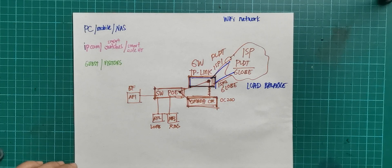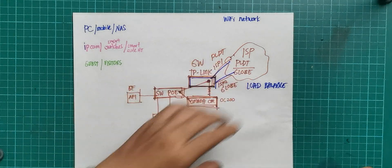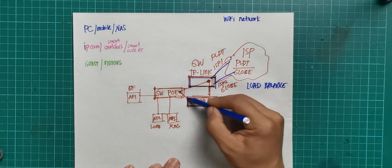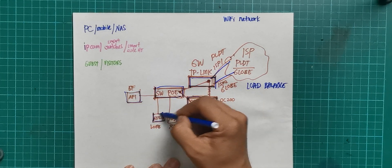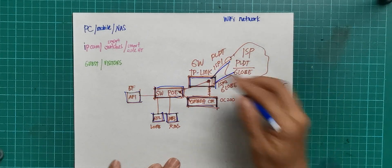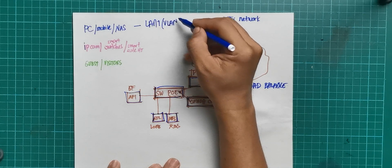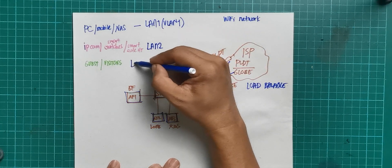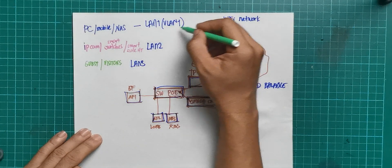So that's the hardware part: three APs in the Omada system. The Omada controls the gateway, the PoE switch, and the APs. We have LAN1 as the native VLAN 1, and also LAN2.